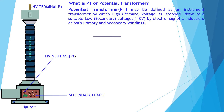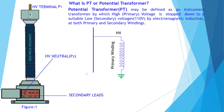This is the primary winding of a PT. The primary winding of a potential transformer consists of a large number of turns, which is connected across the HV lines with system voltage. P1 is the HV terminal and P2 is the HV neutral connection.